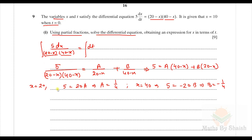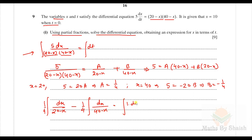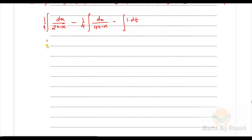Substituting these values and integrating both sides: (1/4)∫dx/(20 − x) − (1/4)∫dx/(40 − x) = ∫dt. This gives (1/4)ln|20 − x| + (1/4)ln|40 − x| = t + c, noting the sign from differentiating the inner functions.